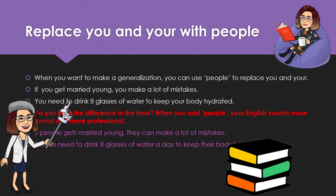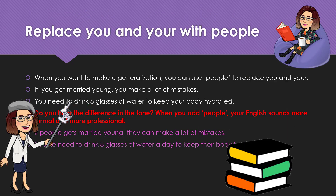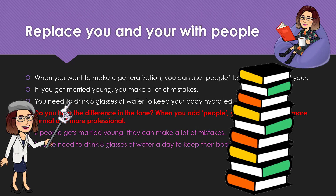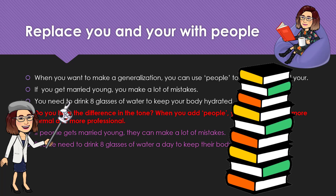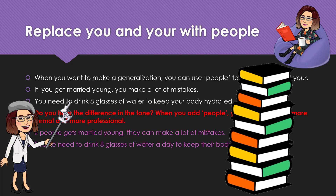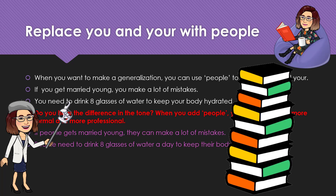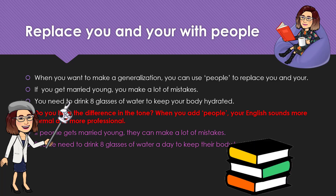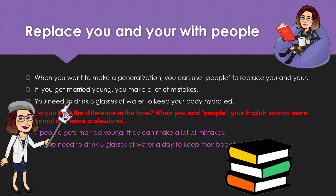You can also replace you and your with 'people.' When you want to make a generalization, you can use people to replace you and your. For example: 'If people get married young, they can make a lot of mistakes' and 'People need to drink eight glasses of water a day to keep their body hydrated.'